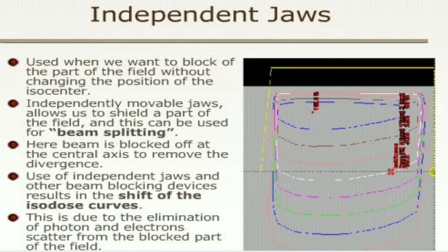Independent jaws are used when we want to block off part of the field without changing the position of the isocenter. Independently movable jaws allow us to shield a part of the field and can be used for beam splitting. The beam is blocked off at the central axis to remove the divergence. Use of independent jaws and other beam blocking devices results in a shift of isodose curves, due to the elimination of photon and electron scatter from the blocked part of the field.